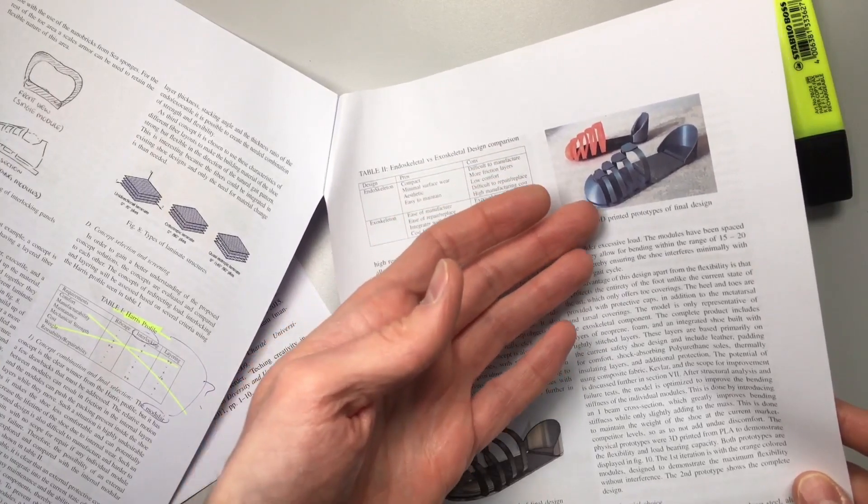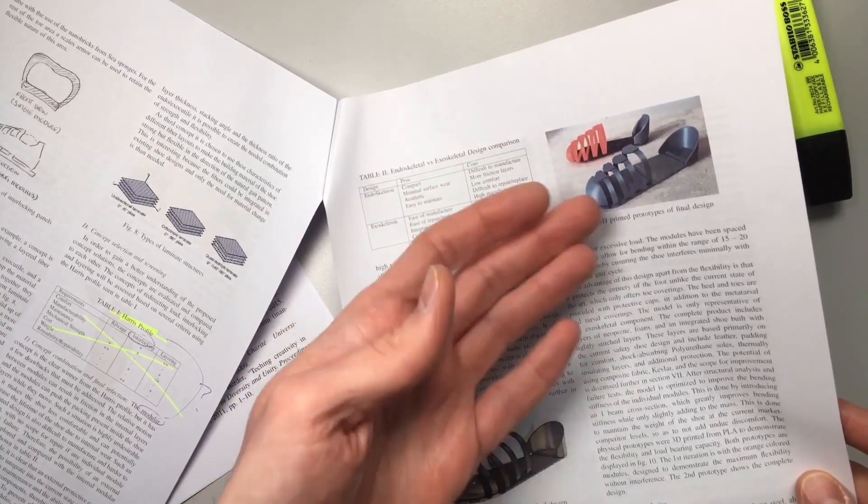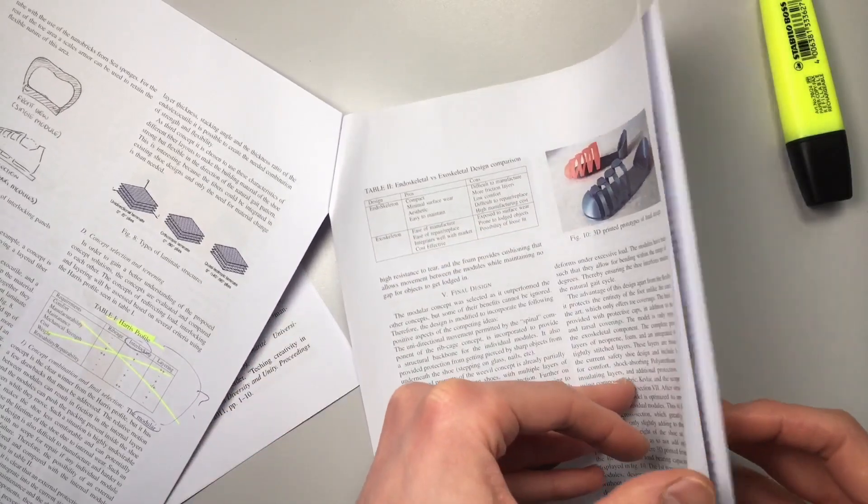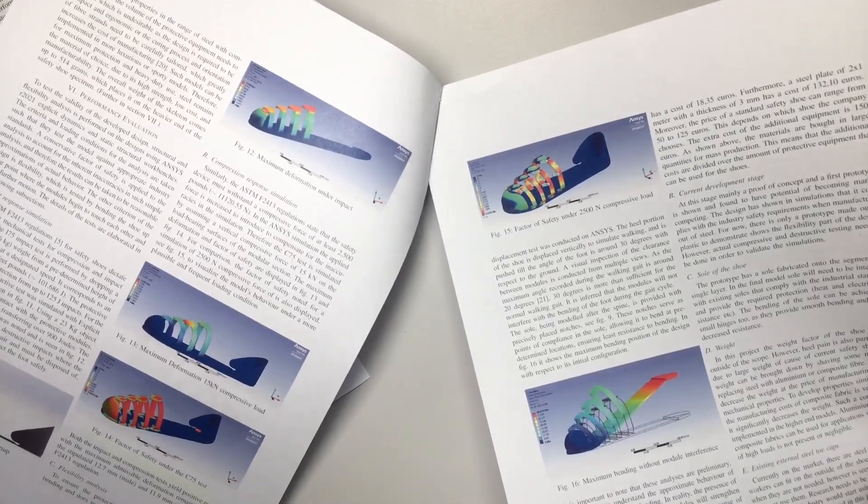The main claim here was that this rib cage would lead to more natural movement of the foot during walking, and instead of showing that there's lots and lots of calculations.